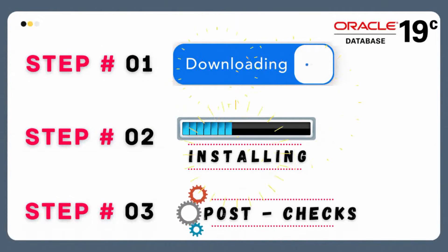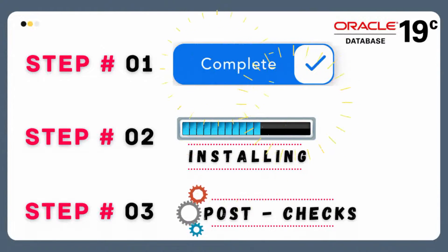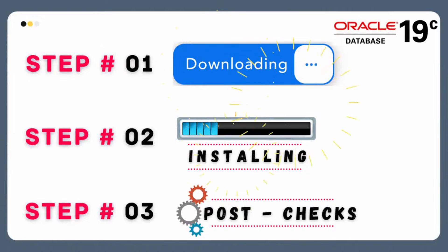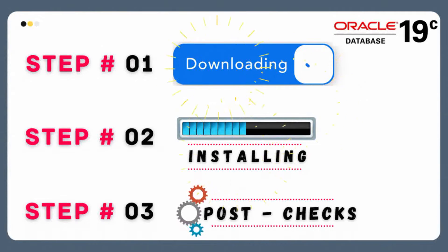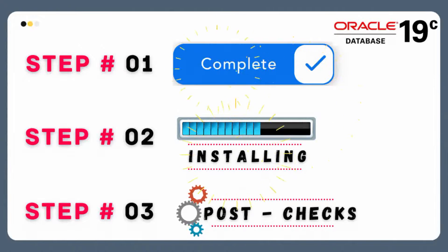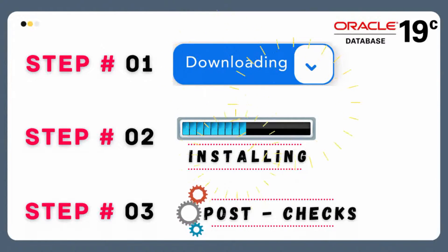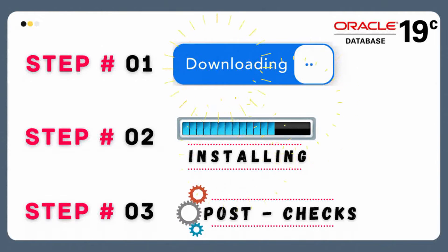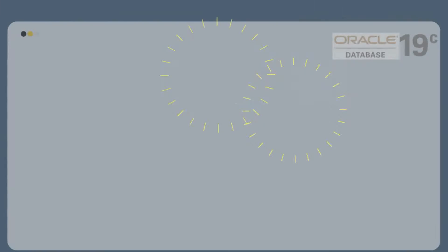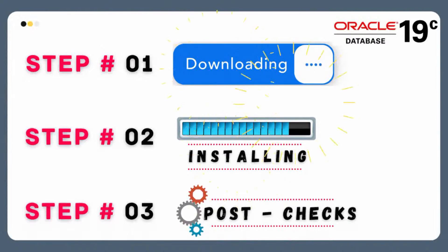In step one, we are going to download Oracle 19c Enterprise Edition software file directly from the Oracle official website. In step two, we will install the downloaded Oracle 19c Enterprise Edition software file on Windows operating system. In step three, the final step, that is post installation check — we will ensure that Oracle 19c Enterprise Edition software is perfectly installed on our machine by opening Oracle Web Admin GUI interface and also by opening the SQL Plus command terminal interface.